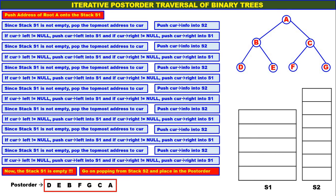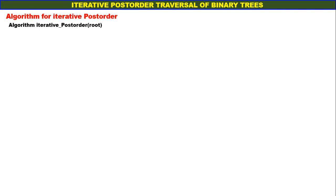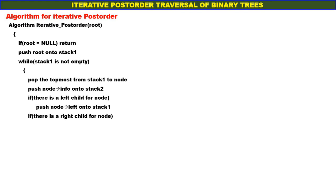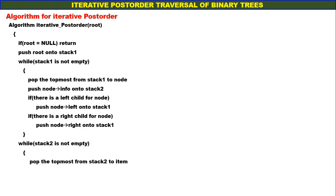This is the post order using iteration. The operation is quite simple. Now let us see the algorithm for iterative post order. If root is equal to null, return. Otherwise, push root onto stack 1. While stack 1 is not empty: pop the topmost from stack 1 to node; push node info onto stack 2; if there is a left child for node, push node left onto stack 1; if there is a right child, push node right onto stack 1. Go on doing it until stack 1 becomes empty. When stack 1 is empty, while stack 2 is not empty, pop the topmost from stack 2 to item and display item.